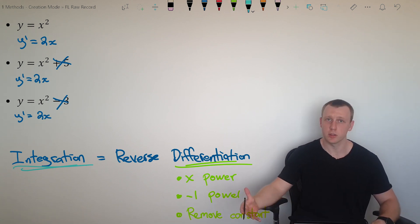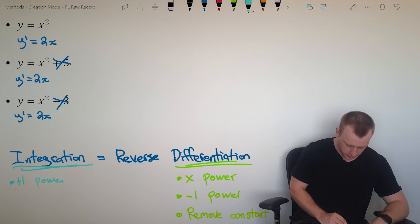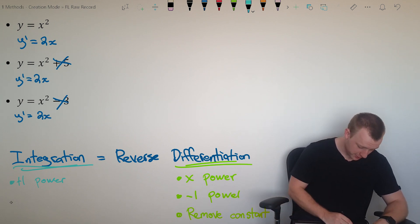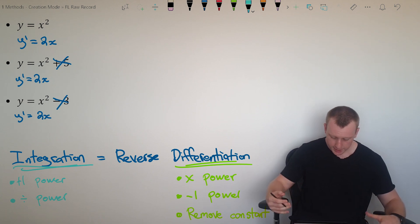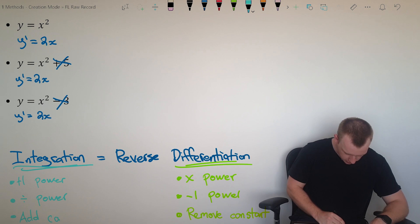If we're doing the reverse process of that, so that's called integrating, we're not going to minus one from power, we're going to add one to the power, because the opposite of subtraction is addition. We're not going to multiply by the power, we're going to divide by the power. And if we're doing the reverse of differentiation and differentiation removed a constant, well we should add it back because that's the opposite of removing. So we add constant.